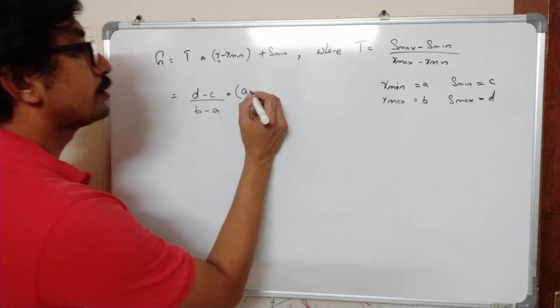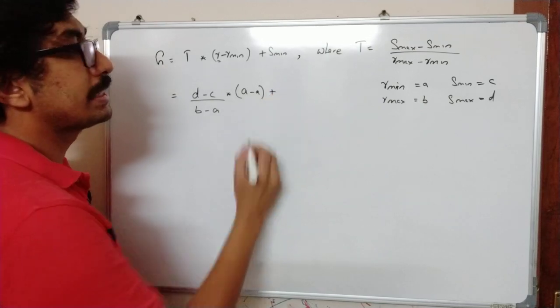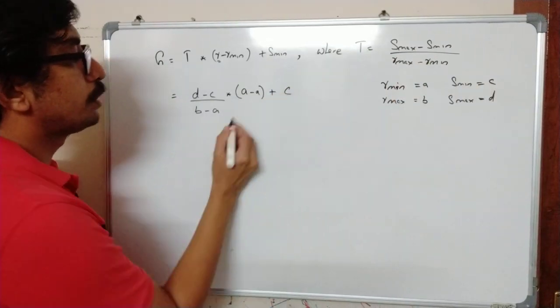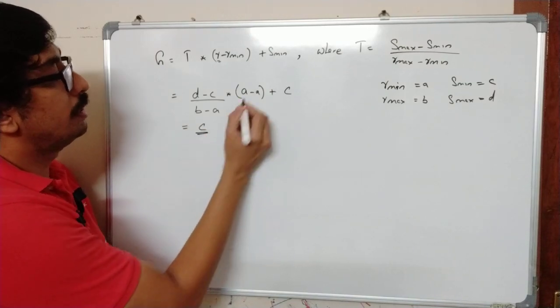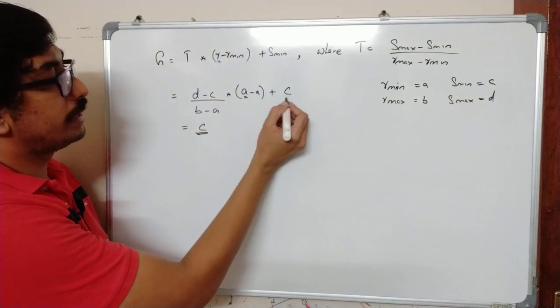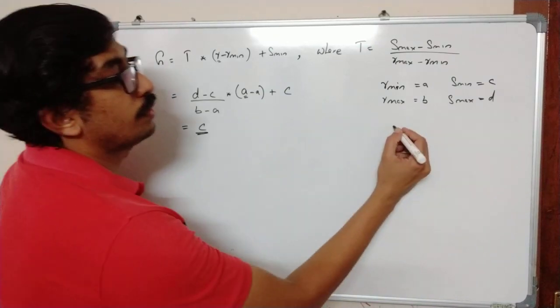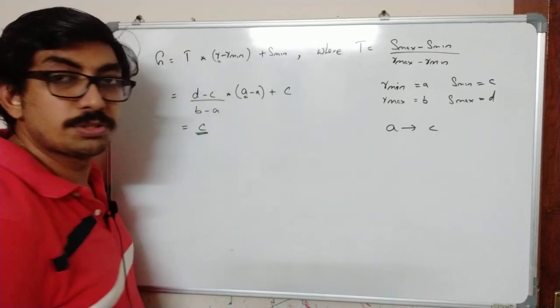So suppose if you have to find the intensity value of A, we will write it as A minus R min. Value of A minus A plus S min, S min is C. So here you can see this is 0 plus C. So for value A we will get the result as C. So gray level A will be changed to C.